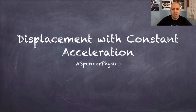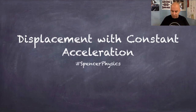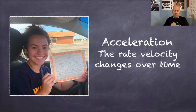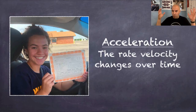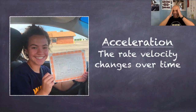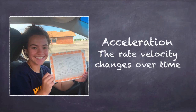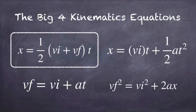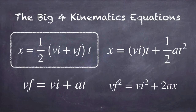We're going to continue with our equations that help us with acceleration. This particular one involves displacement with constant acceleration. There are four big kinematics equations, and the one we're focusing on today is how to find displacement when you have an object moving at different velocities.